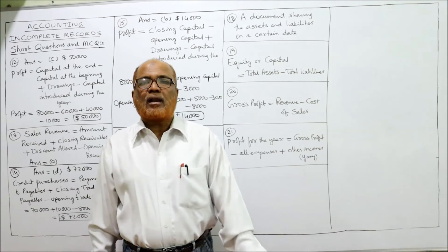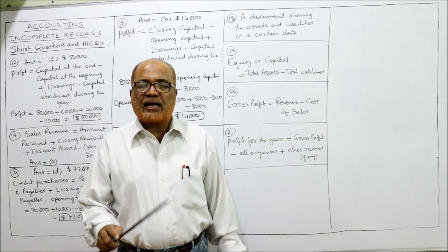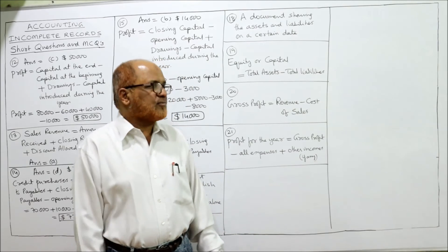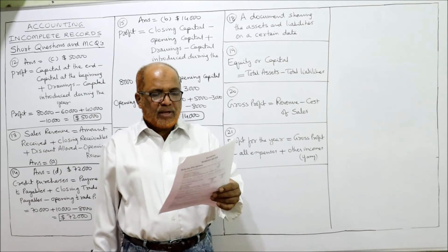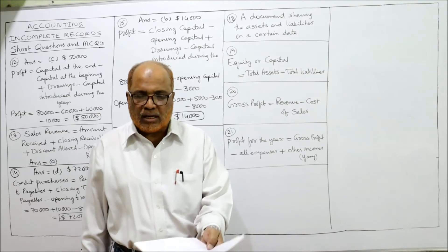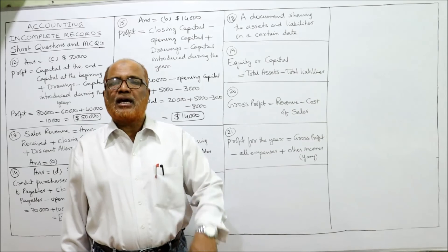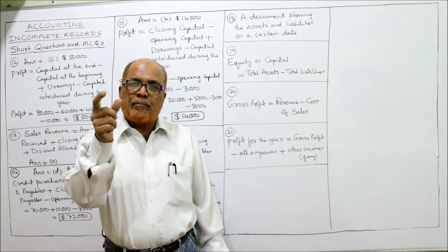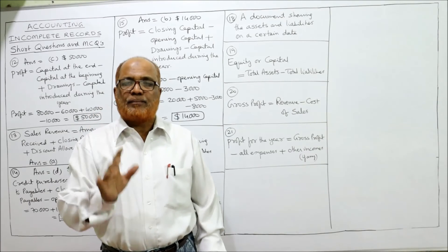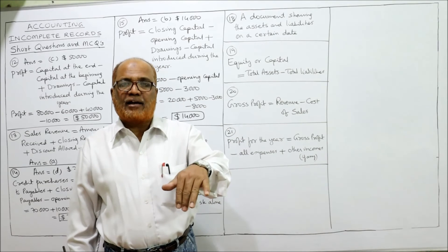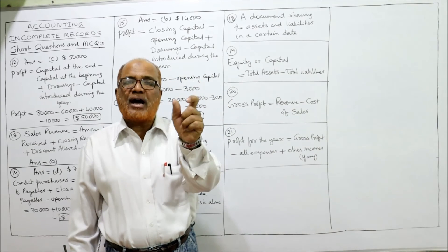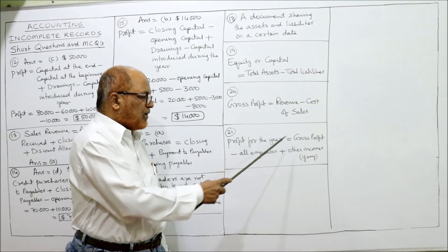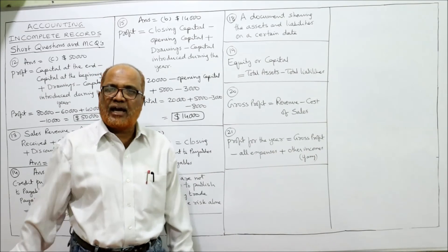Problem 20: how do you calculate gross profit? Gross profit = sales revenue − cost of sales. Problem 21: how do you calculate profit for the year? Profit for the year = gross profit − all expenses + other incomes (if any). If there are no other incomes, then simply: profit for the year = gross profit − expenses.